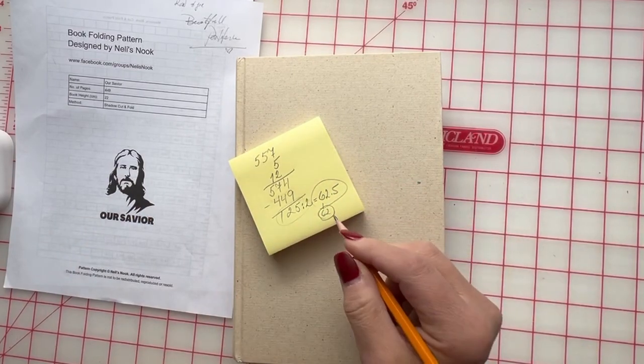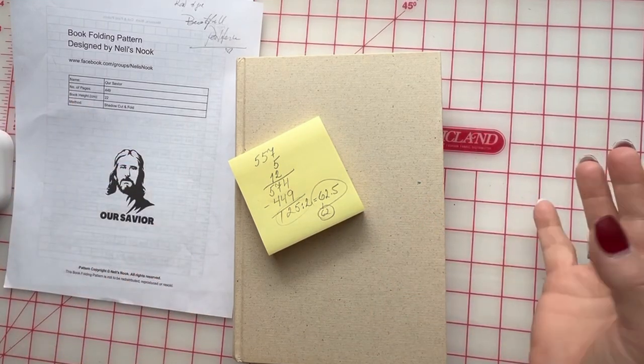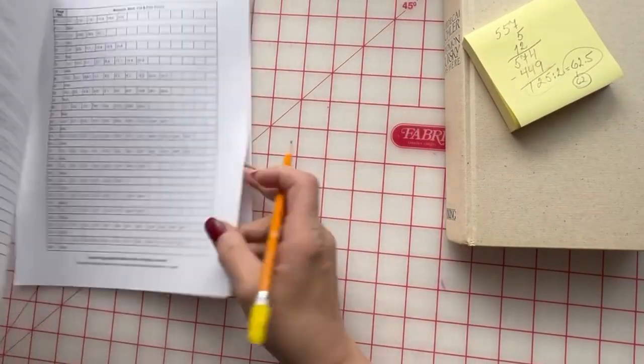That will be our magic number. It means that I will have 62 pages in the front and 63 pages in the back. So 62 is my magic, magic number that I will be working with my pattern on.